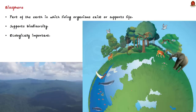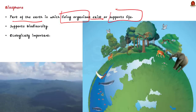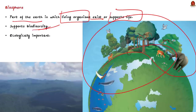The biosphere is that part of the earth in which living organisms exist — that part which supports life. Our biosphere supports biodiversity, meaning it supports varieties of plants, animals, and microorganisms generally found in that area, and thus is of ecological importance. Its protection and conservation are of significance, but they face a wide range of threats.